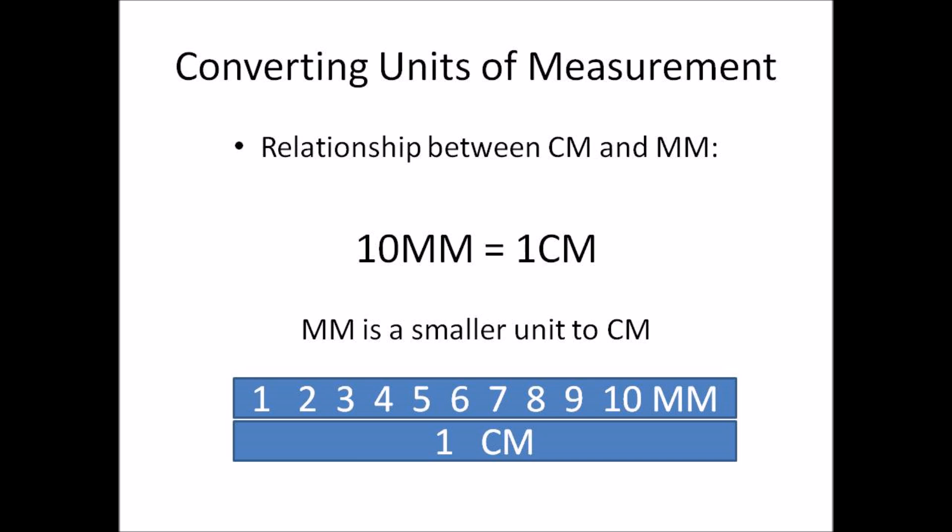Firstly, it's important to understand the relationship between centimeters and millimeters, which is simple: 10 millimeters equals 1 centimeter. This means 10 units of millimeters make up 1 unit of centimeter, and millimeters is a smaller unit of measure compared to centimeters.